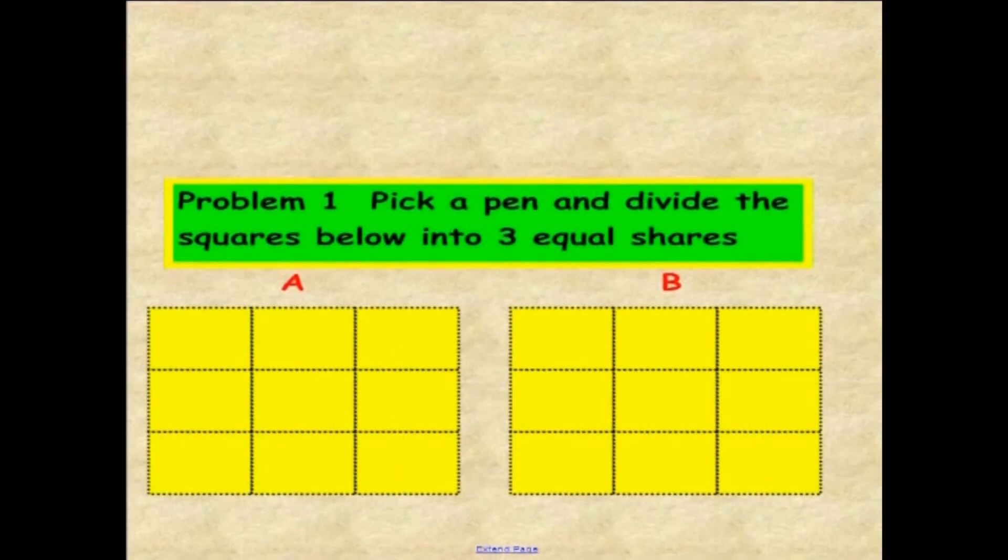Okay students, let's see if you have what we have. I am going to place my marker right here. And you will notice that we have divided the first one up into one, two, three equal shares. And for B, we have done the same thing but this time we went one, two, three vertical. If your answers match ours, that is outstanding.